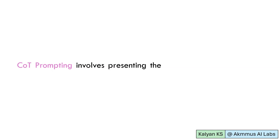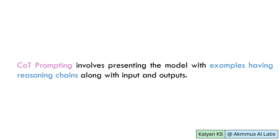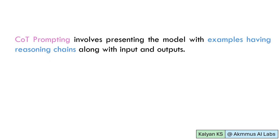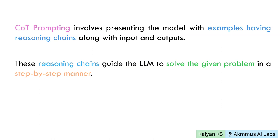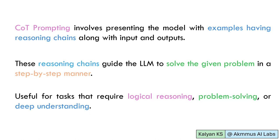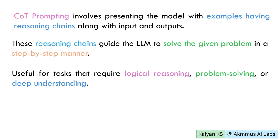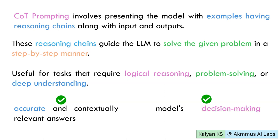Chain-of-thought prompting involves presenting the model with examples having reasoning chains along with inputs and outputs. These reasoning chains guide the LLM to solve the given problem in a step-by-step manner. This prompting technique is especially useful for tasks that require logical reasoning, problem-solving, or deep understanding. This prompting technique not only helps in obtaining more accurate and contextually relevant answers, but also makes the model's decision-making process transparent and easier to understand.